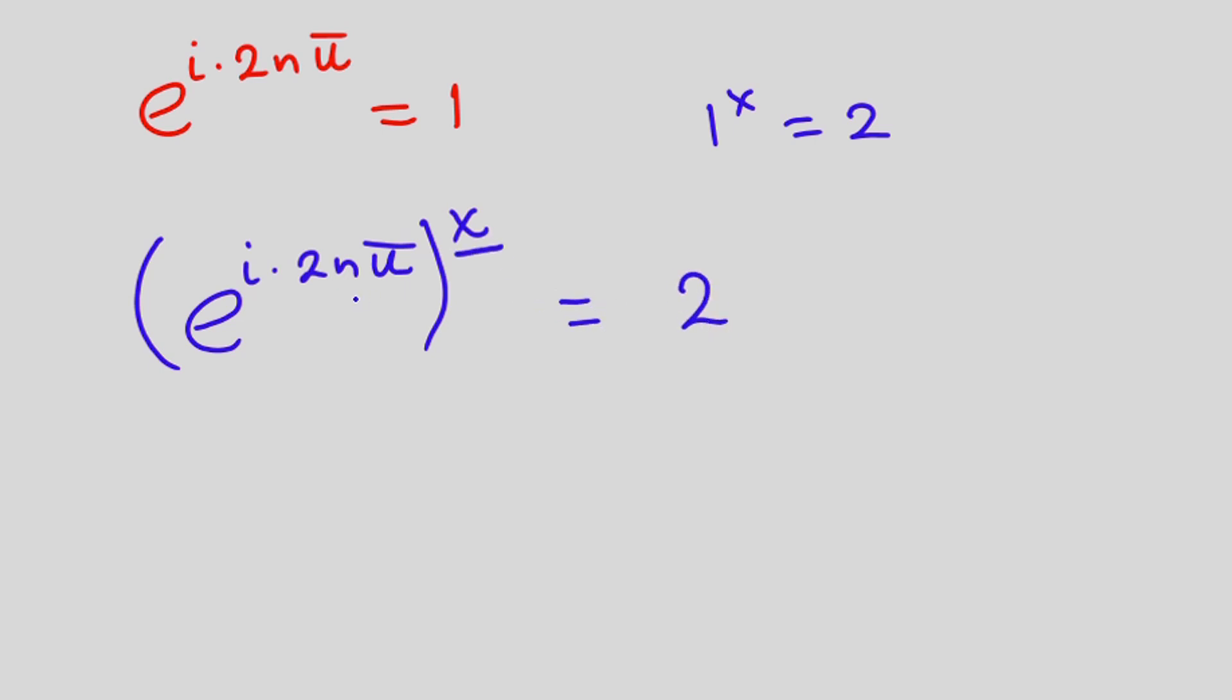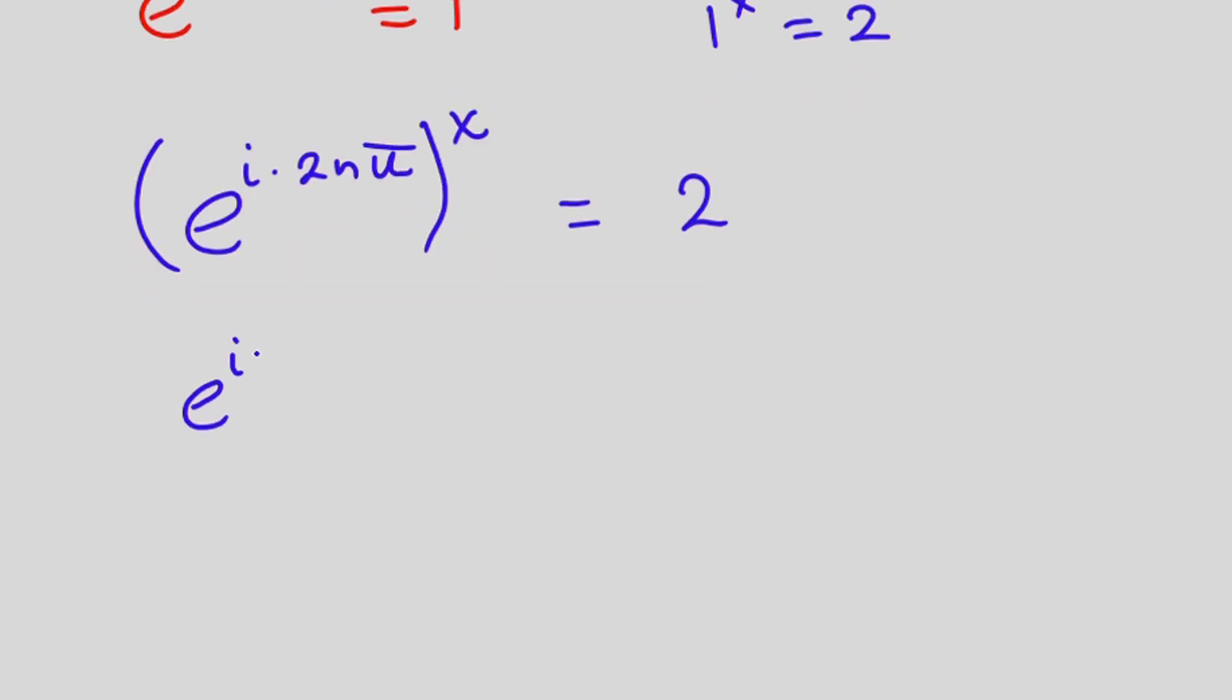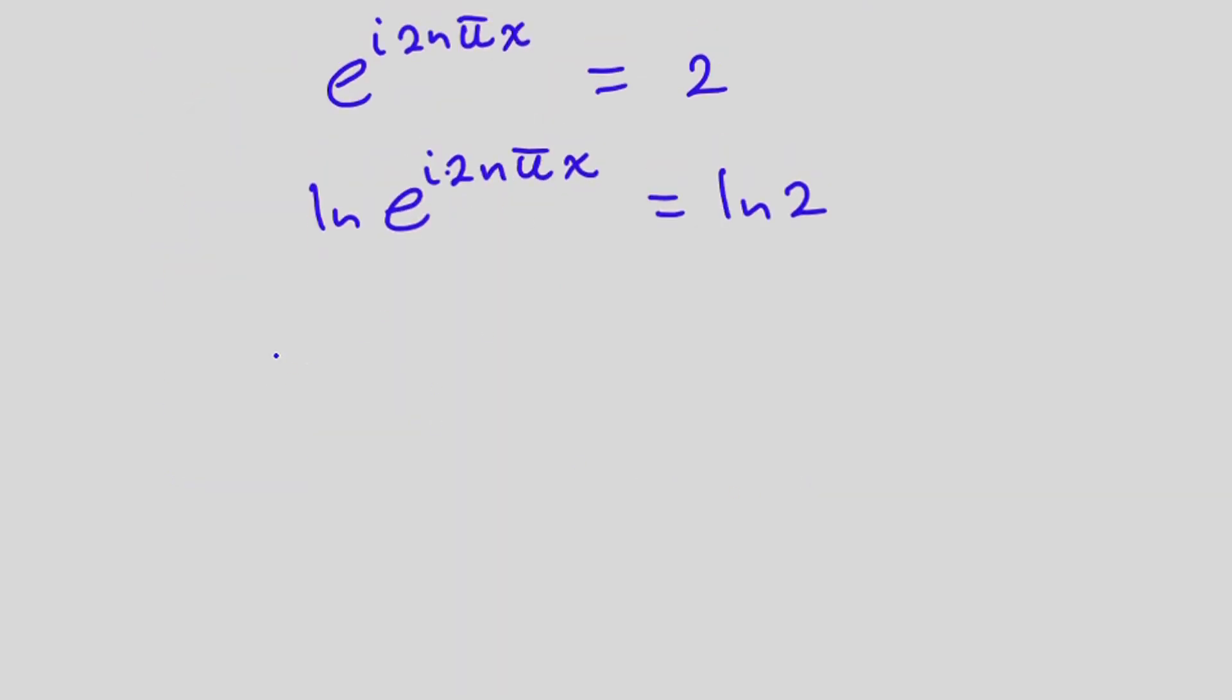Now let's multiply this by this one from indices. So we will have e to the power i times 2n pi x is equal to 2. Now let's take ln of both sides. e to the power i times 2n pi times x is equal to ln of 2. Now we can drop it down. We have i times 2n times pi times x is equal to ln of 2.